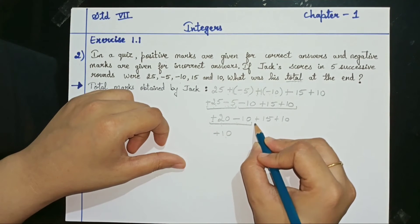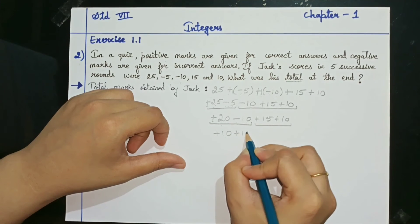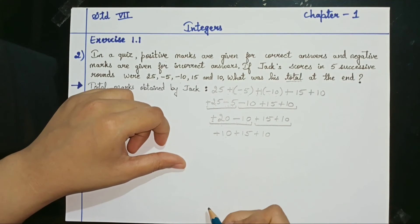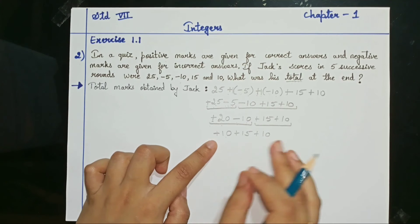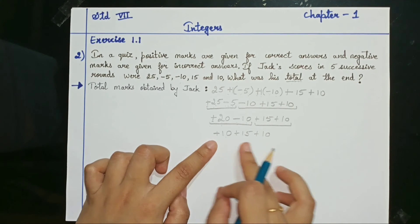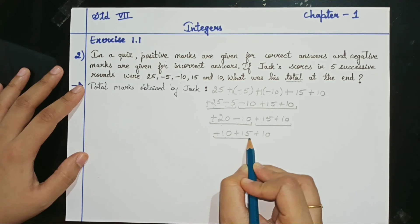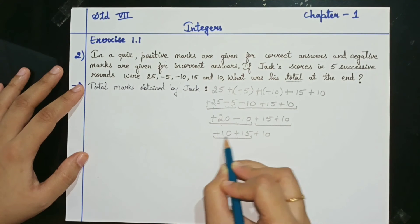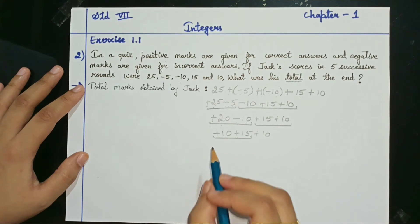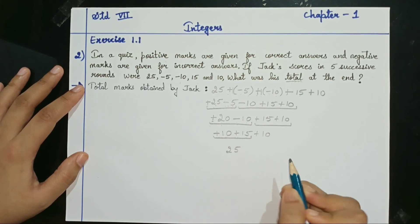What else is remaining? Plus 15 and plus 10 is remaining. Plus 15 plus 10. Now if you want you can just directly add all these, because there is no minus sign. Otherwise if you want to do step wise, once again take the first 2 numbers here. Plus 10 plus 15. So both the signs are same. So if the signs are same, you have to do addition. So 10 plus 15, what's the answer? It is 25.